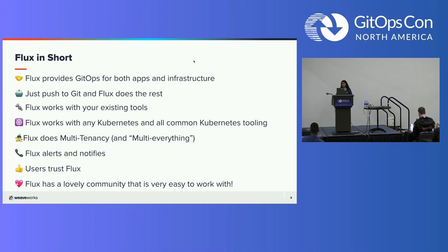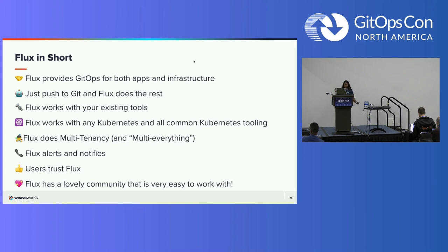Infrastructure and workload dependency management is built in as well. You just Git push and Flux does the rest — Flux manages deployments through automatic reconciliation. Flux works with your existing tools because it was created with Kubernetes and all your ecosystem in mind. It works with your Git providers: GitHub, GitLab, Bitbucket, and you can even use S3-compatible buckets as a source. It also works with Helm repositories, all major container registries, and all CI workflow providers.